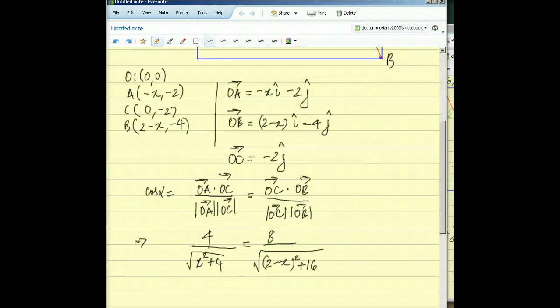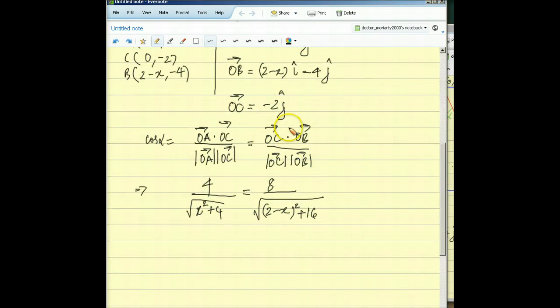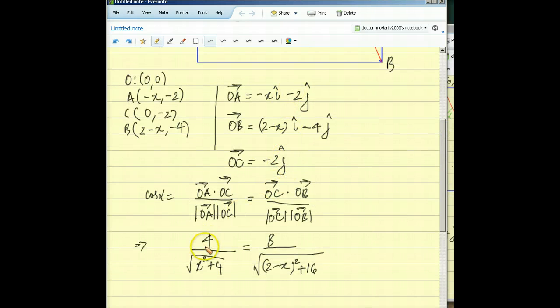If you compute OA dot OC from these three vectors that we've written, you'll find its value is -4. If you compute OC dot OB using these three vectors, you'll find its value is -8.